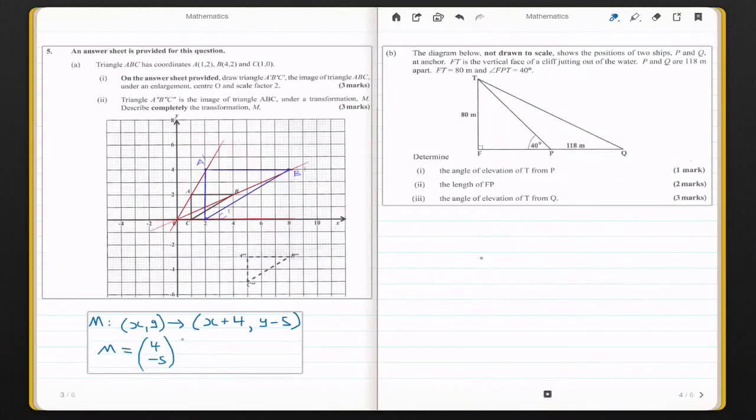Moving on to the next question, we have 5b saying the diagram below, not drawn to scale, shows the positions of two ships P and Q at anchor. FT is the vertical face of a cliff jutting out of the water. P and Q are 180 meters apart. FT is equal to 80 meters and the angle FPT is equal to 40 degrees.